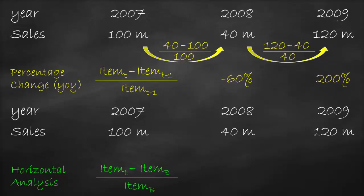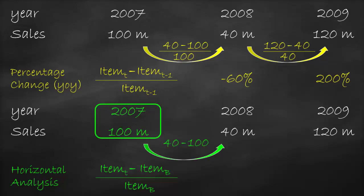The percentage change in 2008 is $40 million minus $100 million, all divided by $100 million, which is equal to negative 60%. This means that the company has lower sales in 2008 compared to the base year of 2007.